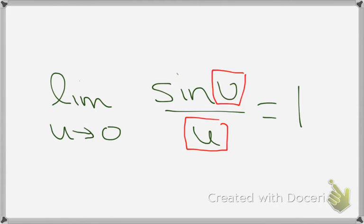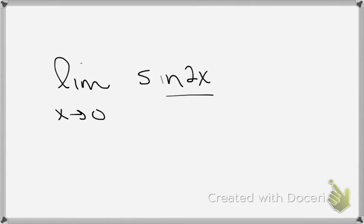Let's look at some real basic examples first. If I had the limit as x goes to 0 of sine 2x over 2x, notice that the argument of the trig function is 2x, the denominator is 2x, and so this limit will be equal to 1.